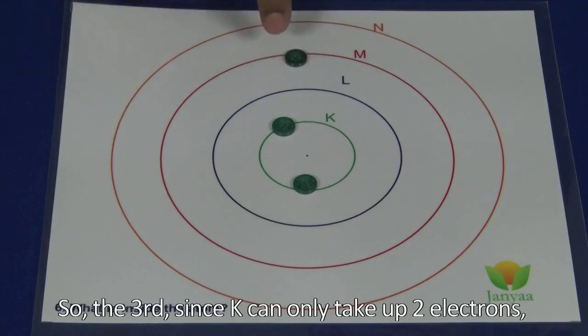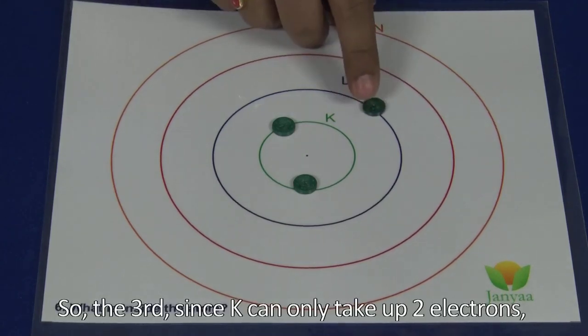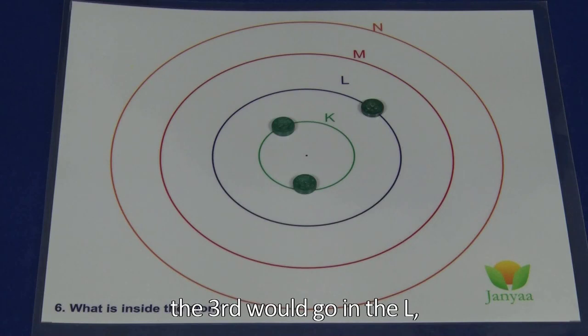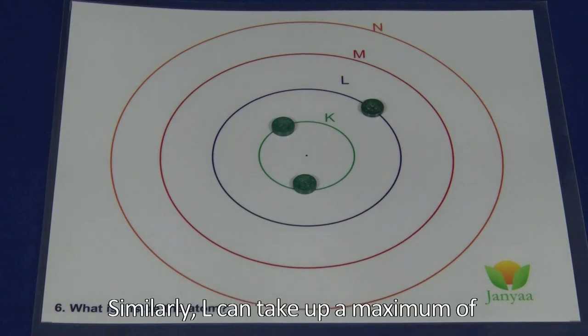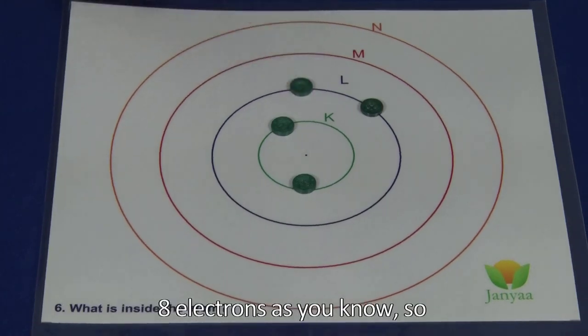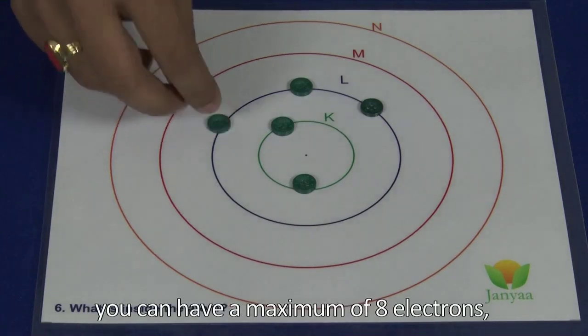The third electron—since K can only take up two electrons—the third would go in the L shell. Similarly, L can take up a maximum of eight electrons as you know, so we can have a maximum of eight electrons.